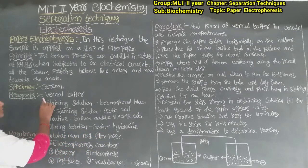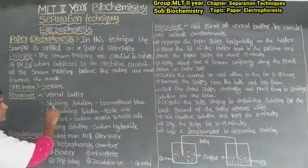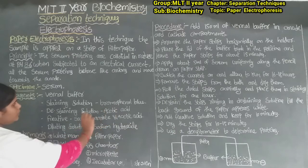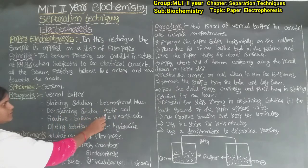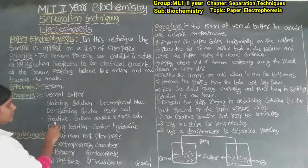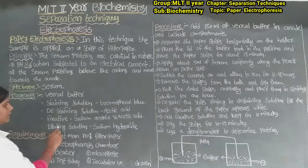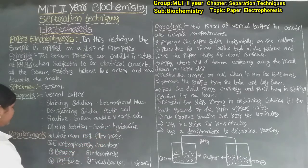The reagents are: first, veronal buffer; staining solution — bromophenol blue; de-staining solution — acetic acid; fixative — sodium acetate and acetic acid; and diluting solution — sodium hydroxide.